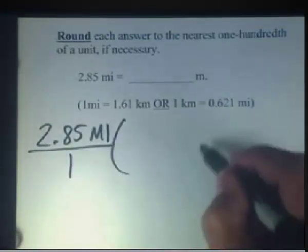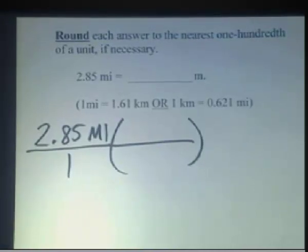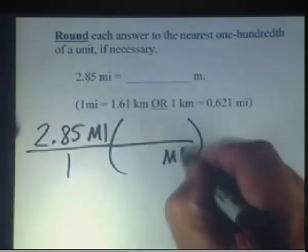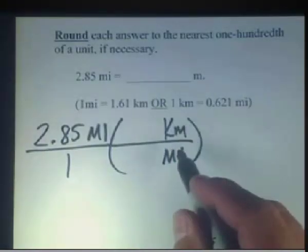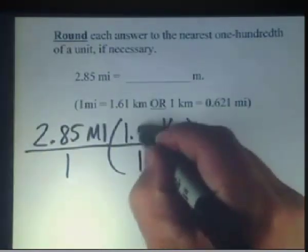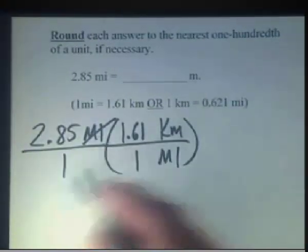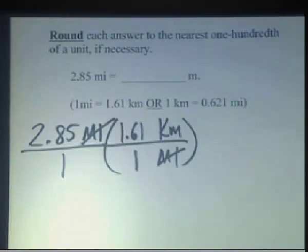We're going to take that times whatever increments we know. In this case we can say the miles need to cancel and we're going to be left with kilometers. We can say in this case that in one mile that's about 1.61 kilometers. So that converts from English to metric in terms of kilometers.